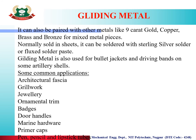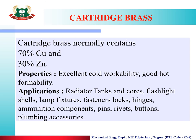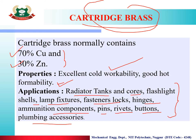The next brass is cartridge brass. Its typical composition is 70% copper and 30% zinc. It has excellent cold working workability and good hot formability — it can be worked into any shape. Applications include radiator tanks and cores, flashlight shells, lamp fixtures, fasteners, hinges, ammunition components, pins, rivets, buttons, and plumbing accessories.